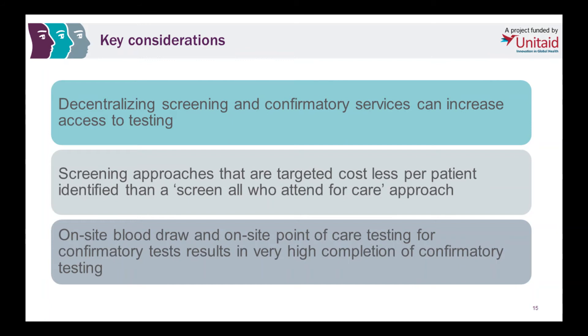Of the 1,672 people enrolled, 1,517 completed a confirmatory test. In Arm 1, where they had point-of-care testing on-site, 100% received the confirmatory test. In Arm 2, where 485 people were enrolled, 483 received the confirmatory test — 99.4%. In Arm 3, the standard of care where patients were referred to a separate treatment clinic, 77.5% received the confirmatory test. Key considerations for decentralization: decentralizing screening and confirmatory services can increase access to testing, targeted screening approaches cost less per patient than a screen-all approach, and on-site blood draw or point-of-care testing for confirmatory tests results in very high completion rates.